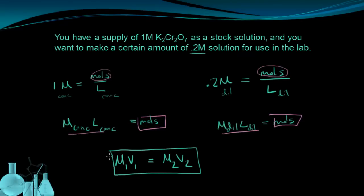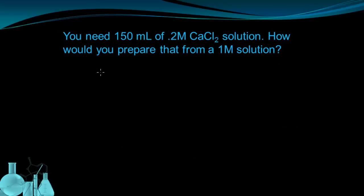Now that we've seen where this dilution equation comes from, let's use it to solve a problem. Here we have a situation. You need 150 milliliters of 0.2M CaCl2 solution. How would you prepare that from a 1M solution?